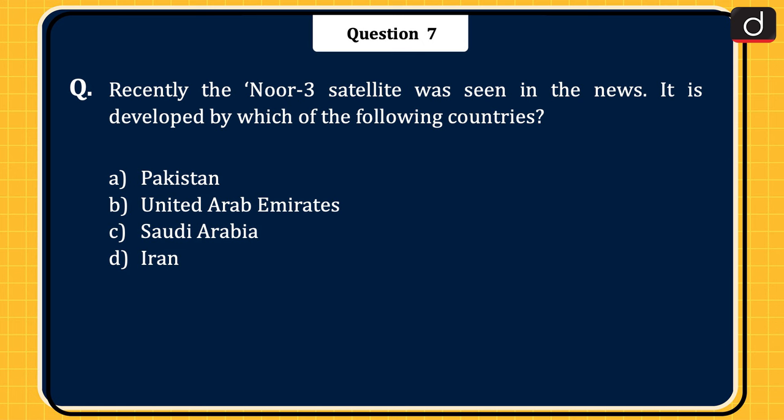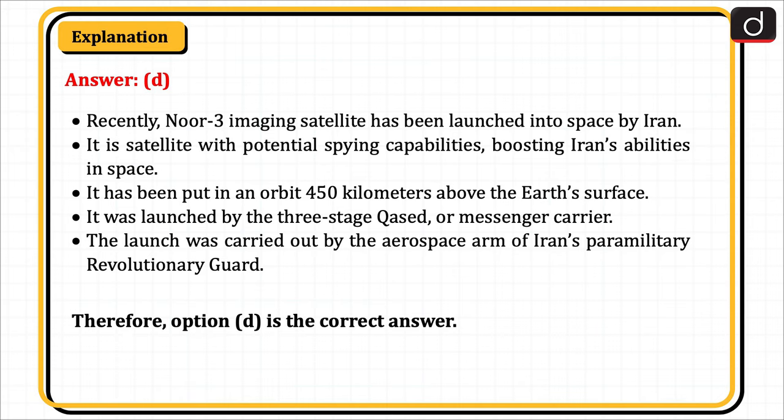The next question: recently, the Noor 3 satellite was seen in the news. It is developed by which of the following countries? Pakistan, United Arab Emirates, Saudi Arabia, or Iran. The correct answer is option D, Iran. Recently, the Noor 3 imaging satellite has been launched into space by Iran. It is a satellite with potential spying capabilities, boosting Iran's abilities in space. It has been put in an orbit 450 km above the Earth's surface. It was launched by the three-stage Qasid, or messenger, carrier rocket. The launch was carried out by the aerospace arm of Iran's paramilitary Revolutionary Guard. Therefore, option D is the correct answer.